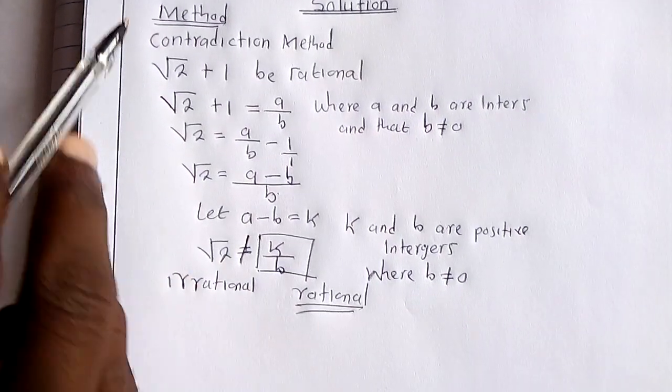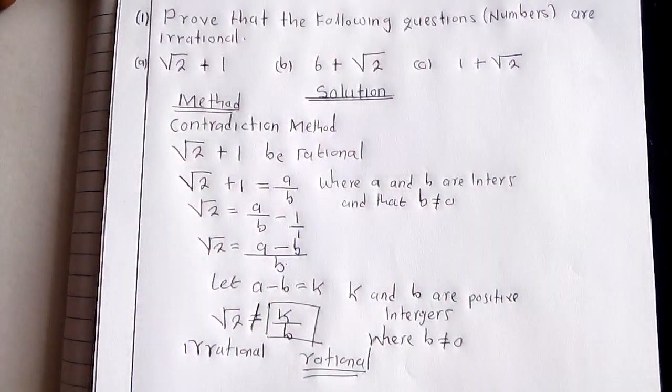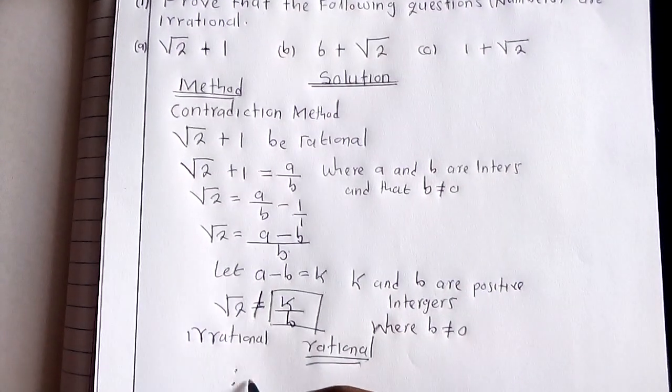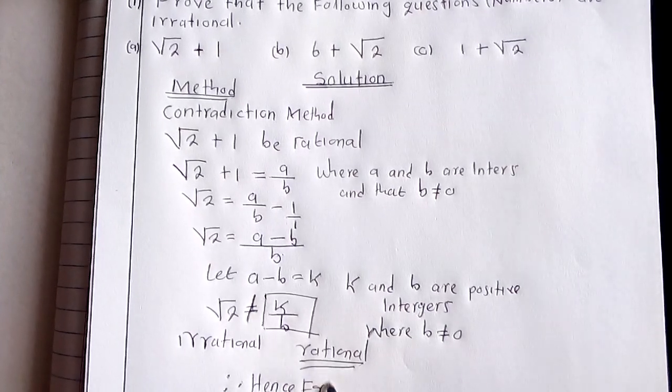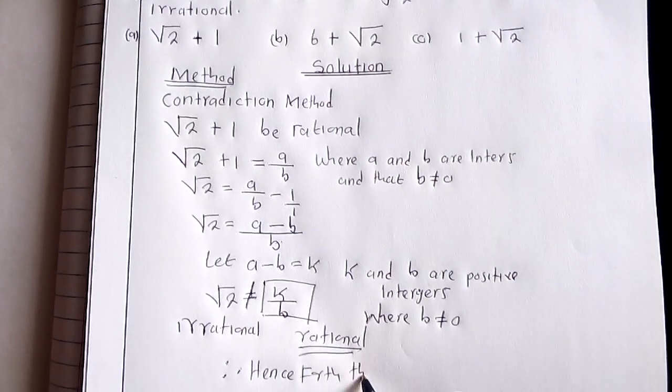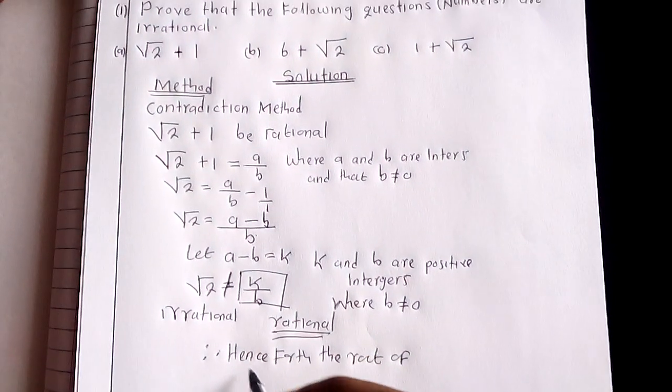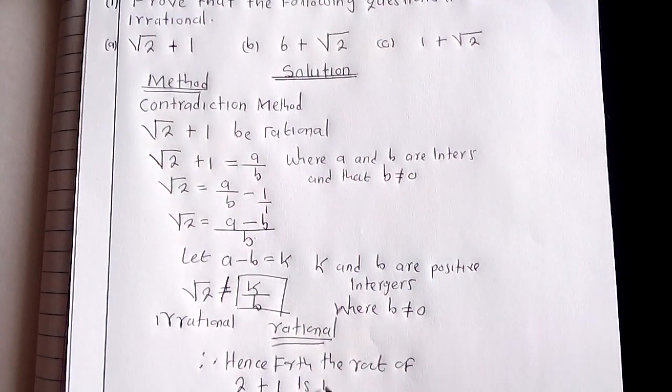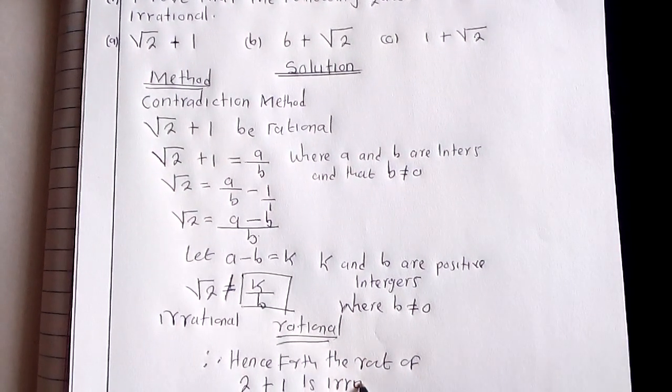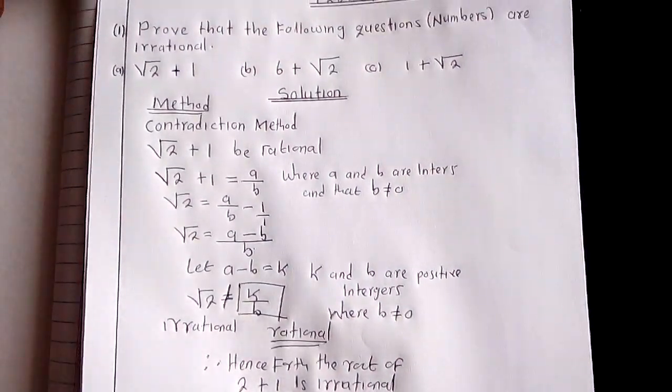You have proved that the root of 2 plus 1 is irrational. You say henceforth, the root of 2 plus 1 is irrational. You have proven.